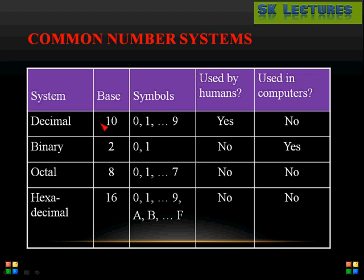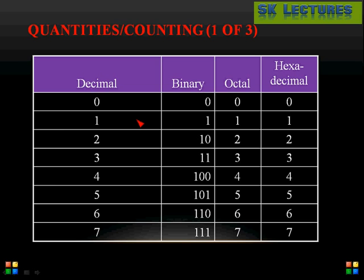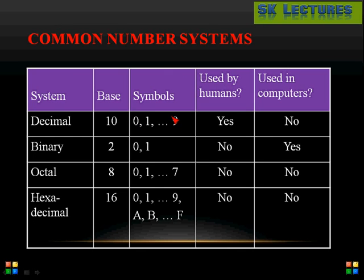The decimal number system has base 10 because it contains 10 total digits. Binary has base 2, so it contains 2 digits. Octal has base 8 with digits 0 to 7. Hexadecimal has base 16 with digits 0 to 9 and A to F — 10 digits plus 5 alphabets — giving a total of 16 symbols.